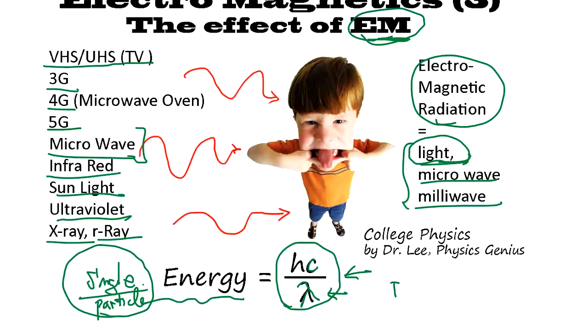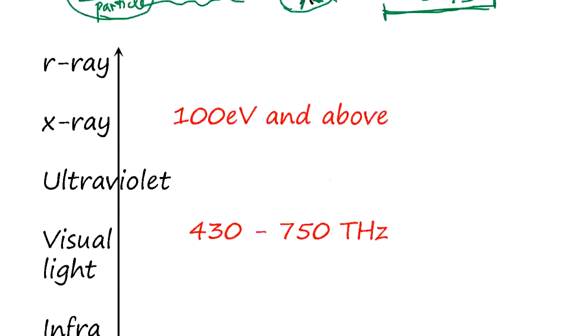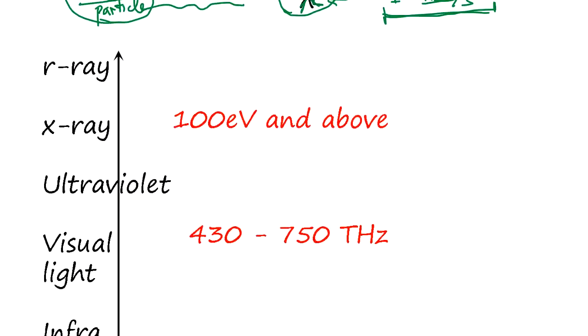When the wave becomes shorter, energy is higher. But you have to know, this is the energy carried by a single wave. Another thing you have to understand is intensity. Intensity is how many waves you send per second. The frequency determines the energy carried by each single wave.